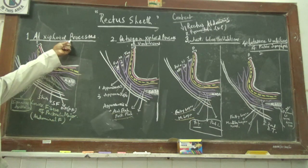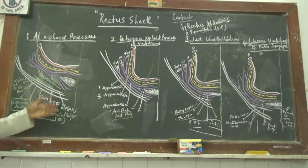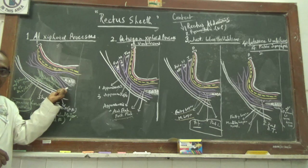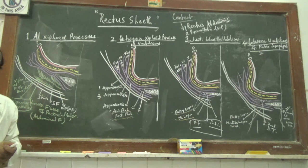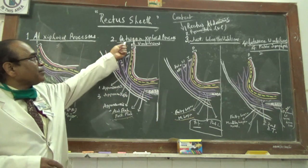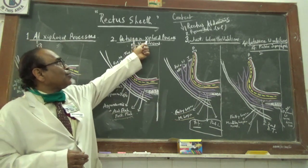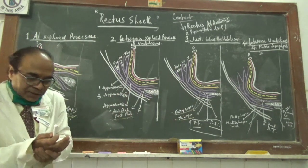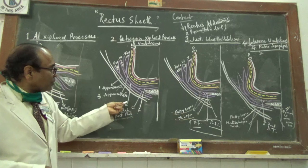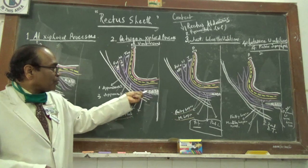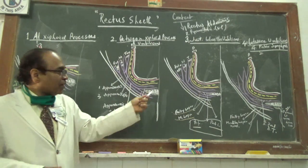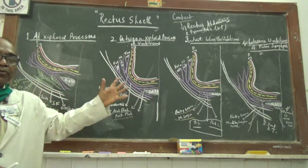To summarize the xiphoid level: anteriorly the Rectus Sheath is complete, but posteriorly it does not cover the rectus abdominis. Now moving to the second level — between the xiphoid process and the umbilicus. Here the aponeurosis of the internal obliquus abdominis divides into two flaps, anterior and posterior, which safely surround the rectus abdominis, forming a complete rectus sheath at this level.